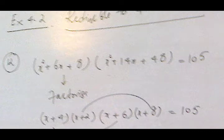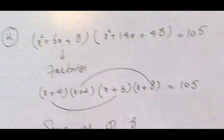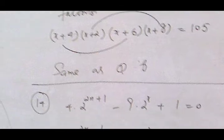In the next quadratic question, we first factorize the equations. In the first bracket we have 8 and 6, with factors 4 and 2. In the second bracket we have 48, with factors 8 and 6. We arrange these factors to make the same sums: 4 and 6, and 2 and 8, same as question number 8.